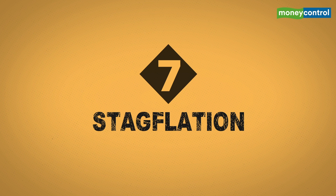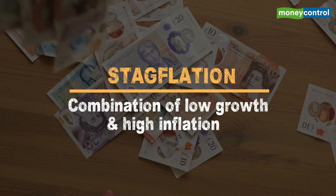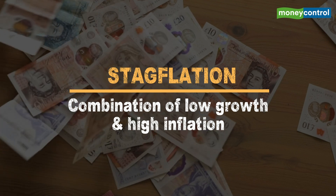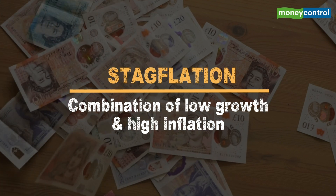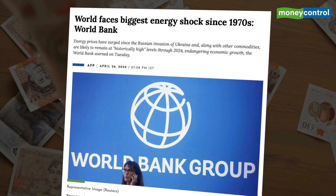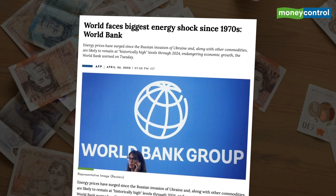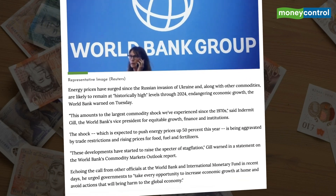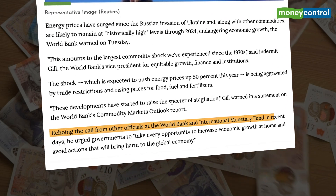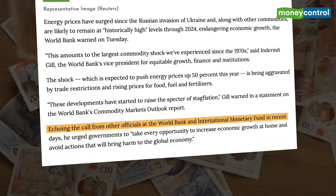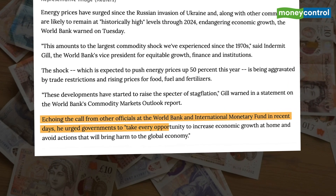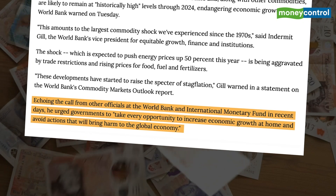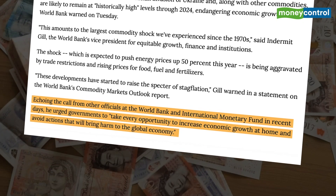Now coming to stagflation, which is a combination of stagnation and inflation. It refers to a period of low growth and high inflation. A classic example of stagflation is the 1970s. The World Bank has drawn comparisons between the current situation and the 1970s, citing the prolonged period of highly accommodative monetary policy in major advanced economies, followed by persistent supply-side disturbances pushing inflation higher.